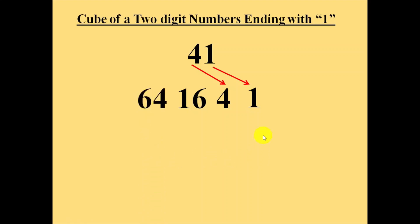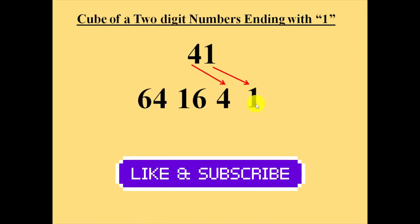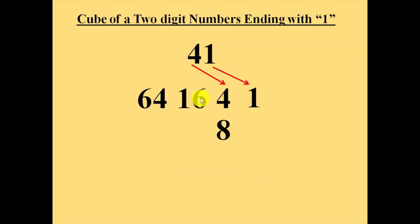Then we will leave this number 1 and go to the second number 4 and multiply it with 2, noting down here: 4 times 2 is 8. Then go to number 16 and multiply it with 2, which will make 32, and note down here.